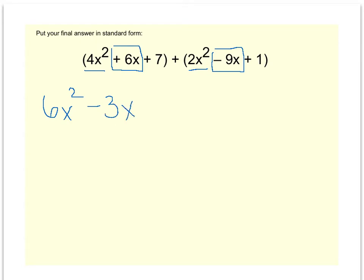Lastly, we have two constants, a plus 7 and a plus 1. 7 plus 1 is a plus 8. So I've combined all my like terms, and I have my answer in standard form because the exponent of 2 is the biggest, the exponent of 1, ending with my constant. One more example.